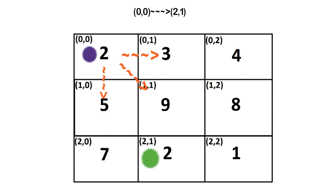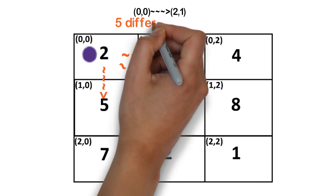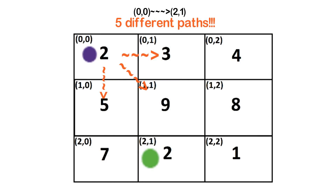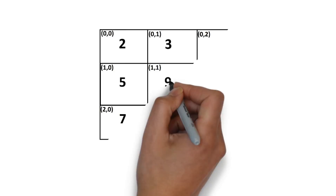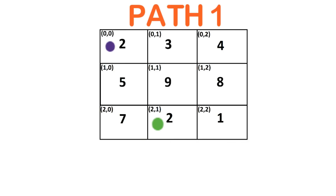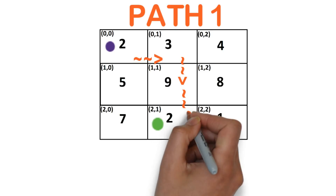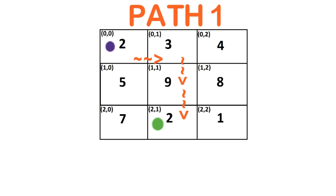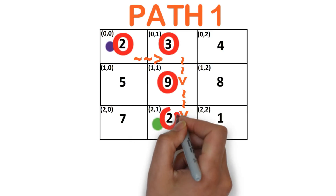Following these rules, we can move from cell 0,0 to cell 2,1 in 5 different paths. In path 1, we move from cell 0,0 to 0,1, then to 1,1, and finally to 2,1. The cost of path 1 is the sum of all cell values along the path: 2 plus 3 plus 9 plus 2, which equals 16.